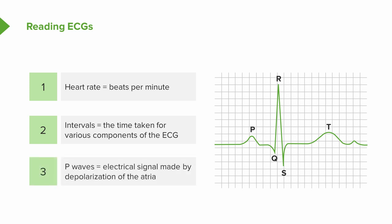So let's start. The first wave in the electrocardiogram is the P wave, and this is the electrical signal made when the atria, that's the upper chambers, depolarize.